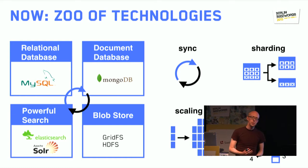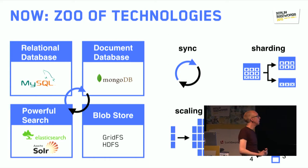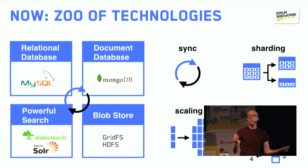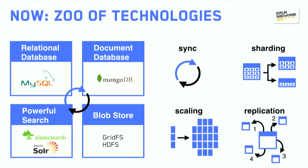We then realize we need some document storage, so we add a document storage solution — and then we need to keep those two pieces working together, again scaling and synchronizing. Then we need search across those two databases. When we need to add capacity, we now have three pieces all interlocking with each other. It becomes more and more complicated, and we spend less and less time actually building a good application.